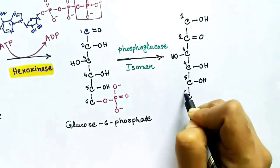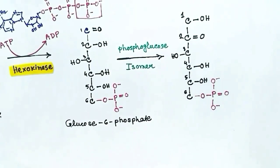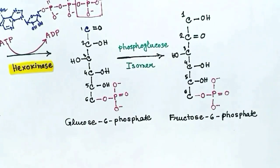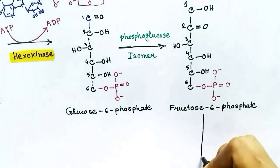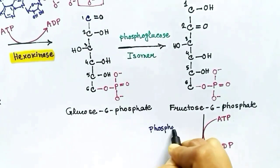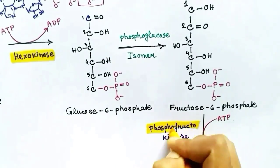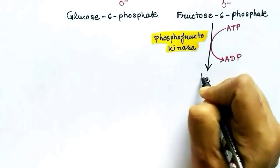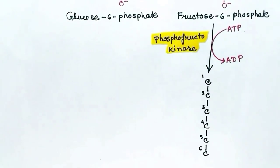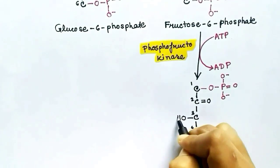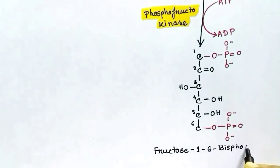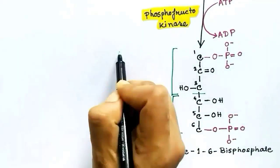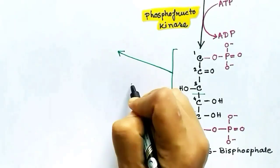In the next step, one more phosphate group is attached to the six-carbon molecule fructose-6-phosphate. The enzyme here is phosphofructokinase. Kinase enzymes are responsible for the deletion or insertion of phosphate groups. Now two phosphates are present in this molecule, making it fructose-1,6-bisphosphate — a fructose molecule having two phosphates, hence 'bisphosphate.'